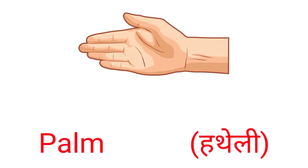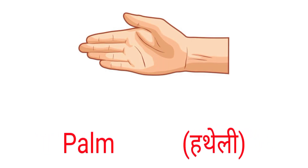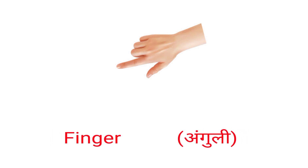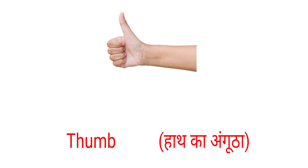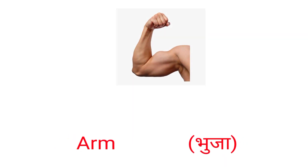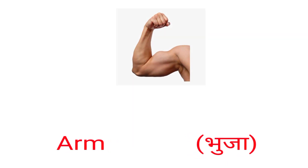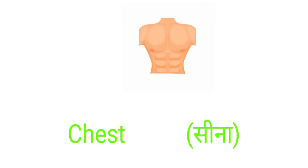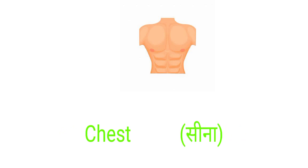Thumb. This is my Thumb. Thumb means Hat. Chest. This is my Chest. Chest means Seena.